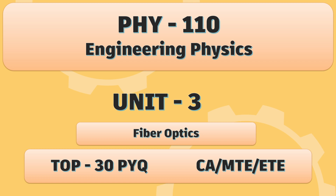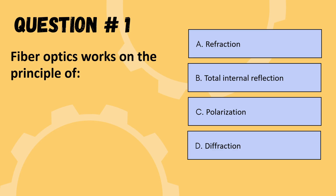Hello everyone, this is Unit 3 of your PHY110. Our first question is: fiber optics work on the principle of — options are refraction, total internal reflection, polarization, or diffraction. The correct option is B: total internal reflection.